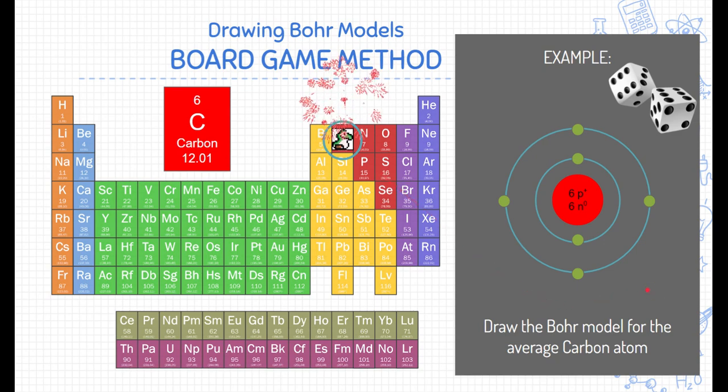Well, this is it. This is the Bohr model for carbon. We're done and we've completed it. Now we know where the electrons go and which electrons have low energy and which electrons have high energy.